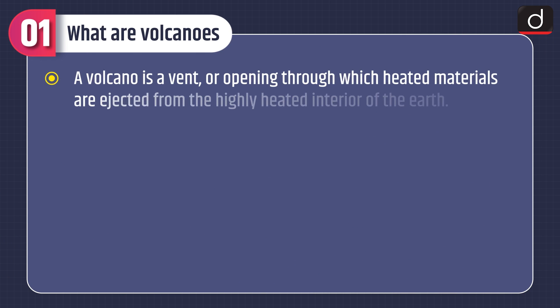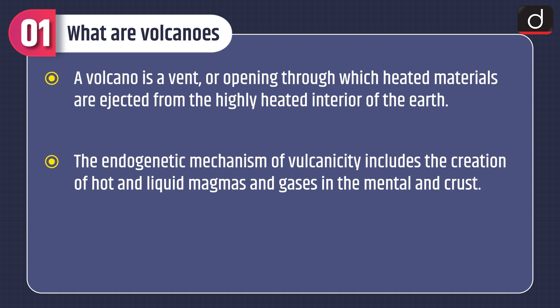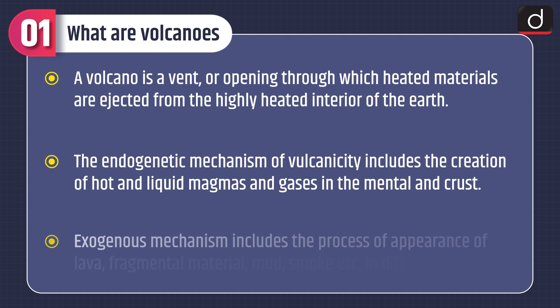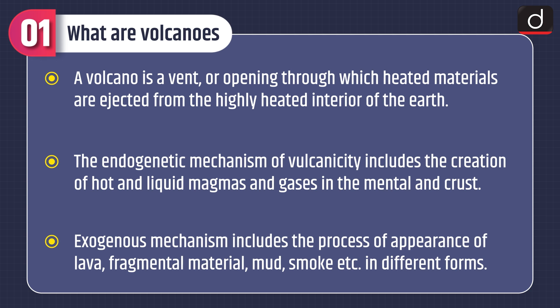First of all, let's discuss what are volcanoes. A volcano is a vent or opening through which heated materials are ejected from the highly heated interior of the Earth. The endogenetic mechanism of volcanicity includes the creation of hot and liquid magmas and gases in the mantle and crust. Exogenous mechanism includes the process of appearance of lava, fragmental material, mud, smoke etc. in different forms.